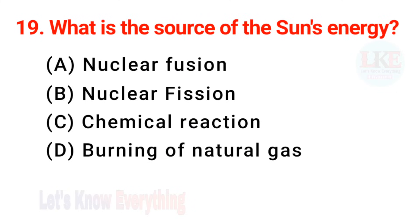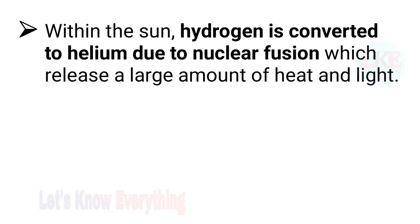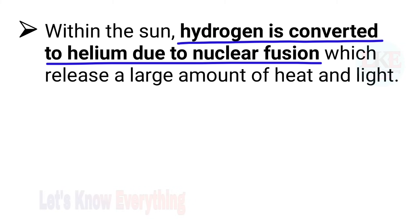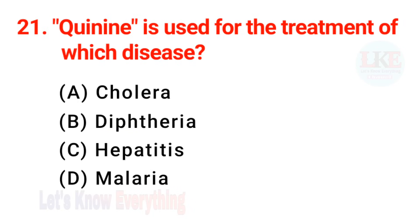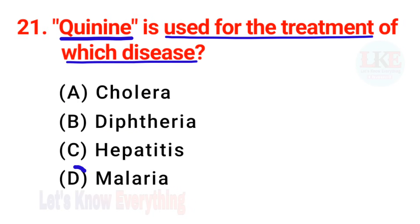Question number 19: what is the source of the sun's energy? Right answer option A — nuclear fusion. Within the sun, hydrogen is converted to helium due to nuclear fusion, which releases a large amount of heat and light. Question number 20: cinchona is used for making which medicine? Right answer option C — quinine. Question number 21: quinine is used for the treatment of which disease? Right answer option D — malaria.